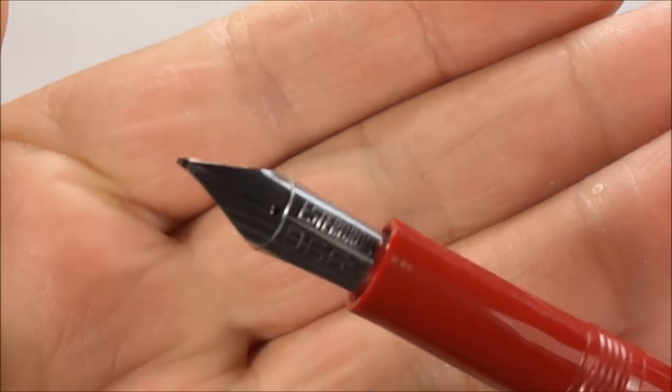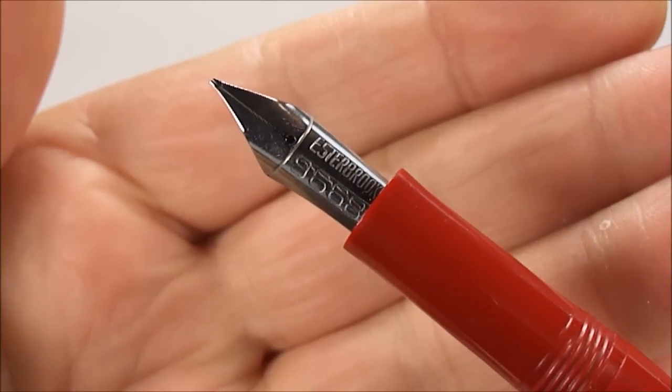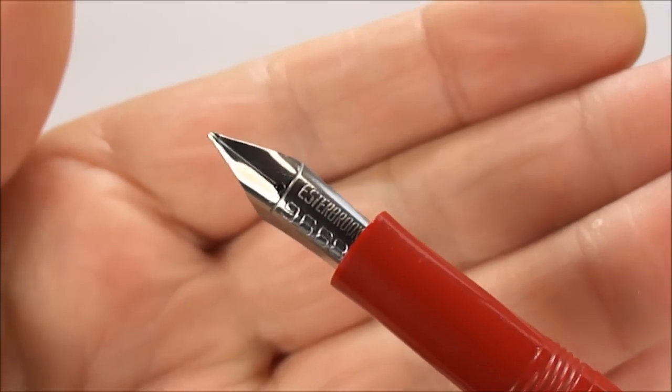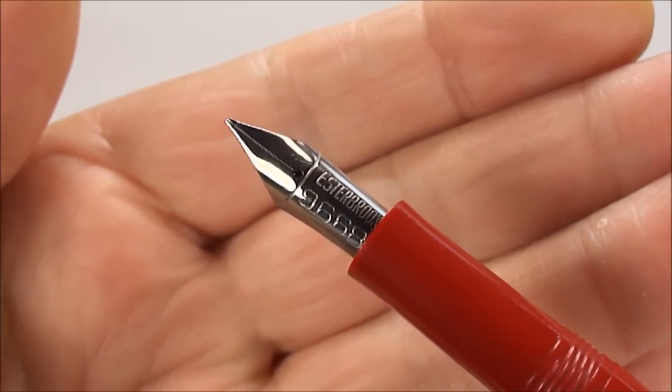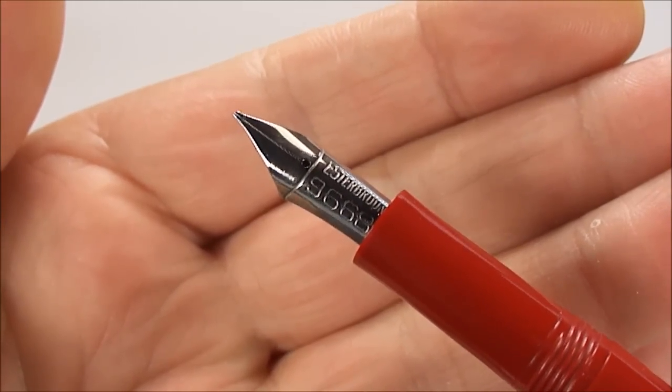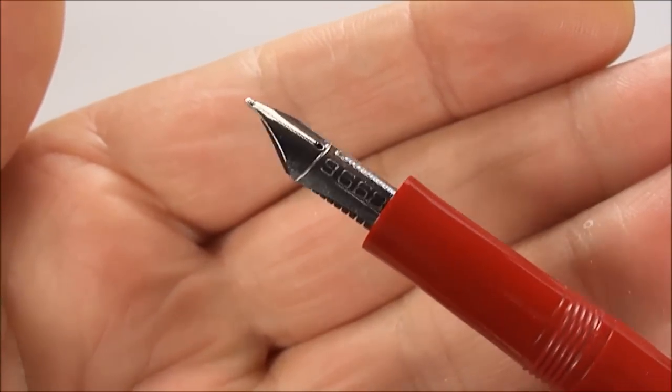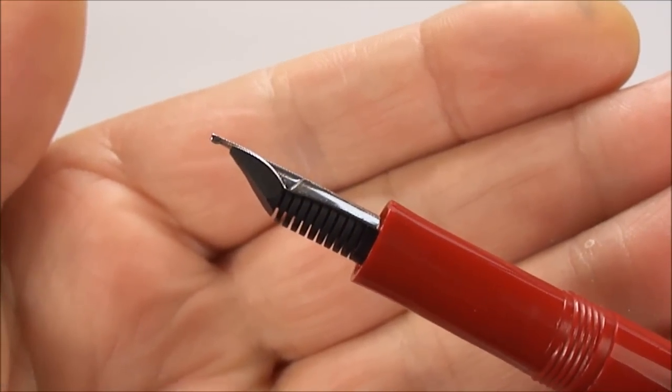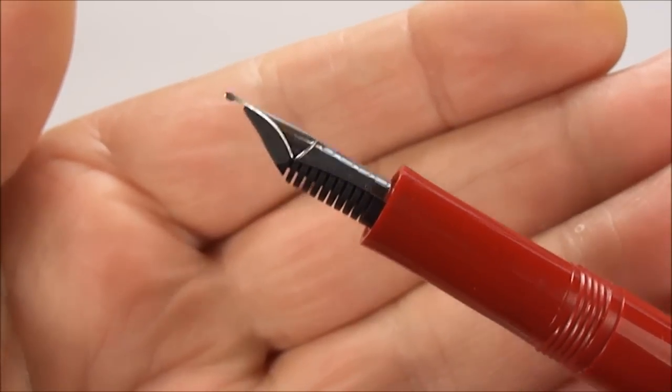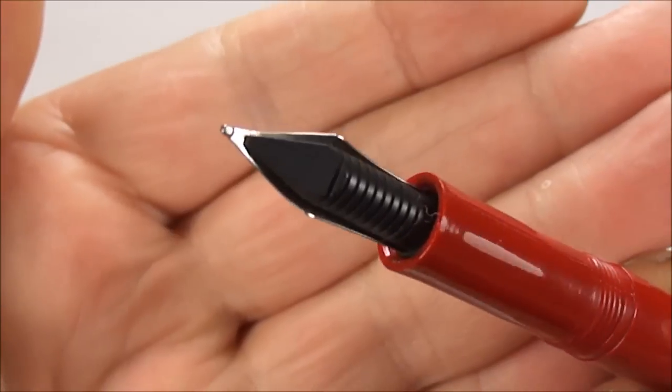If we show you the nib there, again very recognizable Esterbrook nib in stainless steel. This one, if I keep it nice and still for you, you'll be able to see it says Esterbrook 9668. Now that indicates that this nib is a firm medium nib used for general writing.